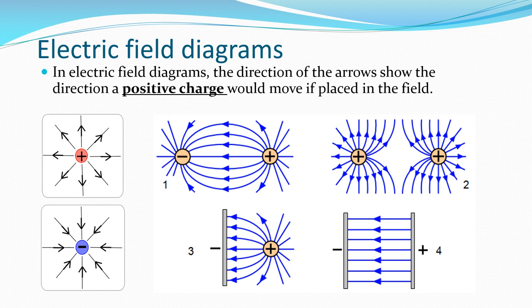The distance between the field lines gives an indication of the strength of the electric field. The closer the field lines are to each other, the stronger the electric field. We see the inverse square law working here, as the field lines become more and more separated the further away from the point charge you are.